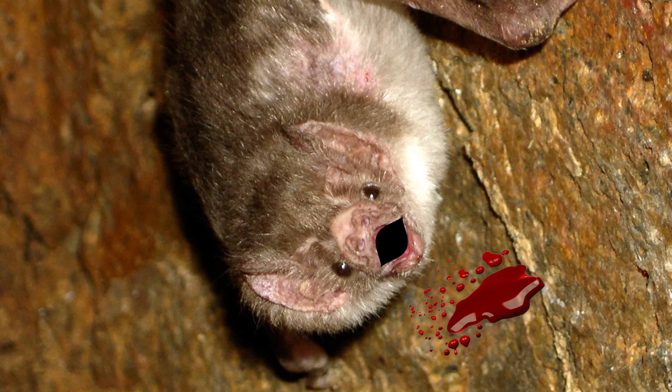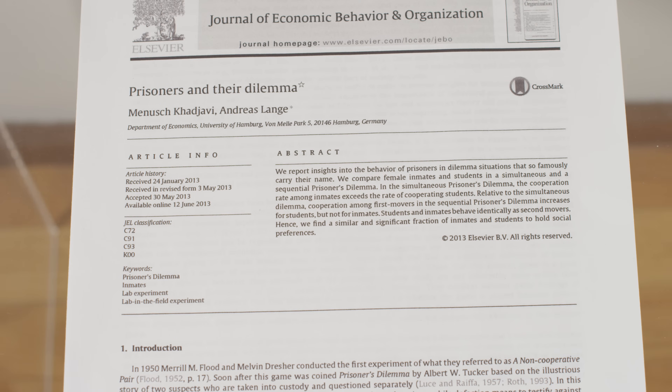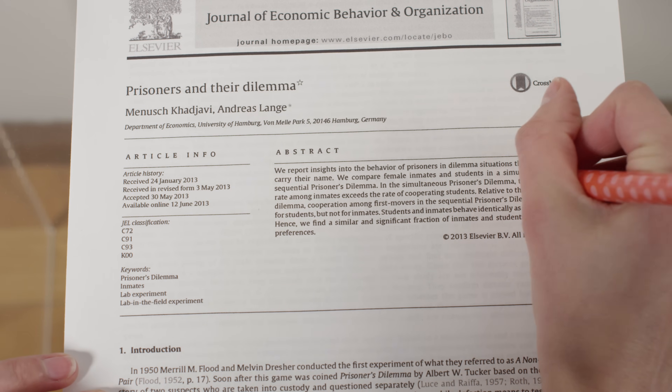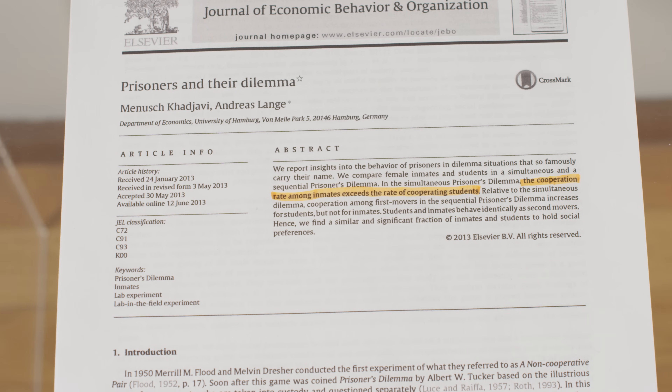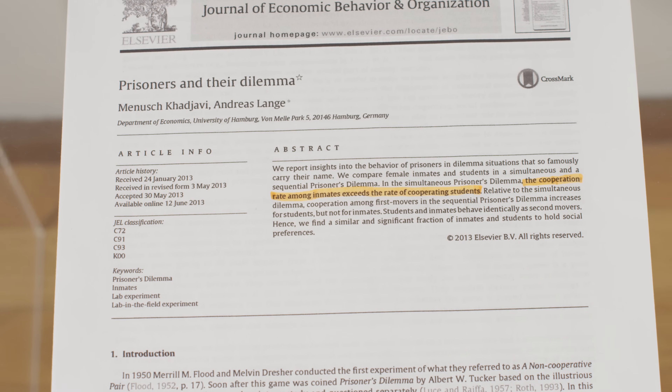So these studies have been done with university students, and that one with the vomiting female vampire bats. But the prisoner's dilemma was originally conceived in the 1950s, and no one thought to do the test on actual prisoners for over 60 years. So in 2013, German researchers found that prison inmates were actually more likely to cooperate with other prison inmates than university students were with other students. Think back to your answer at the beginning of this video. If you were in a real-life situation, do you think your answer would change?